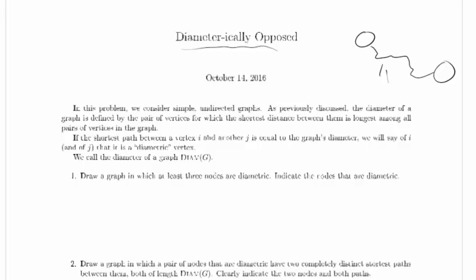If the shortest path between a vertex i and another j is equal to the graph's diameter, we say i and j are diametric vertices. So in this case if this were our i and this were our j, we say i is diametric and j is diametric, but there might be other nodes, maybe even another node that's paired with j where that shortest path is also of length 11. Call that k, and then that'll also be a diametric vertex. We call the diameter of a graph diam(G), so for this imaginary graph I haven't completely drawn, its diameter diam(G) would be 11.